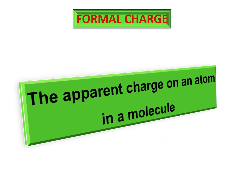What is a formal charge? It's the apparent charge on an atom in a molecule. When you draw a molecule with the correct Lewis structural formula, the first thing you should be concerned about is whether the atoms present in the molecule have any positive or negative charge, or whether they are neutral. That apparent charge is known as the formal charge on that atom.